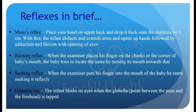Coming on to understanding the reflexes in brief: for Moro reflex, you must place your hand on the upper back and drop it back onto the mattress by 1 cm. With this, the infant abducts and extends its arms and opens up the hands, followed by adduction and flexion along with opening of the eyes. This is the elicitation of the Moro reflex.